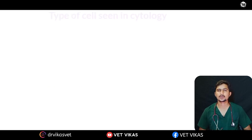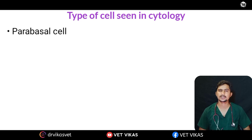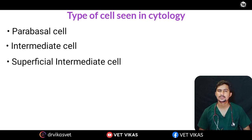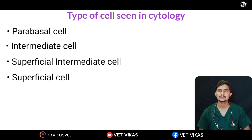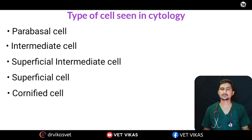Firstly I will talk about what kind of cells you will see in the vaginal cytology. Mainly there are five types of cells: the first one is parabasal cell, then the intermediate cells, the third one is superficial intermediate, the fourth one is superficial cells, and the last one is the cornified cells. Now I will discuss in detail about these cells and how we are differentiating these cells.